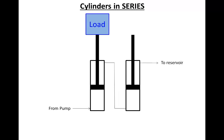Now let's talk about cylinders that are piped in series. The fluid from the pump goes into the bottom of the first cylinder, and as it moves, oil from the top flows into the bottom of the second cylinder. As the second one moves, oil from its top goes out to the reservoir. The pressure in the return line to the reservoir would be 0 psi, assuming free flow. The pressure between the two cylinders would also be 0 because no pressure is needed to overcome the unloaded cylinder.